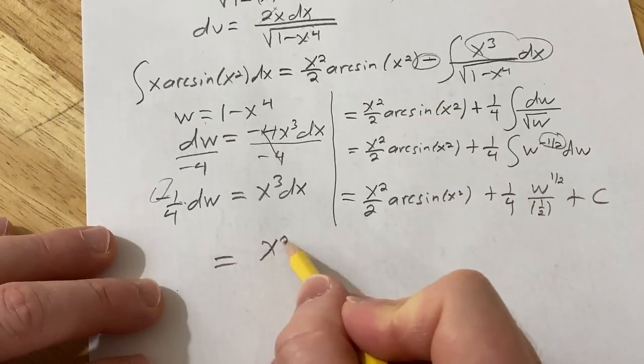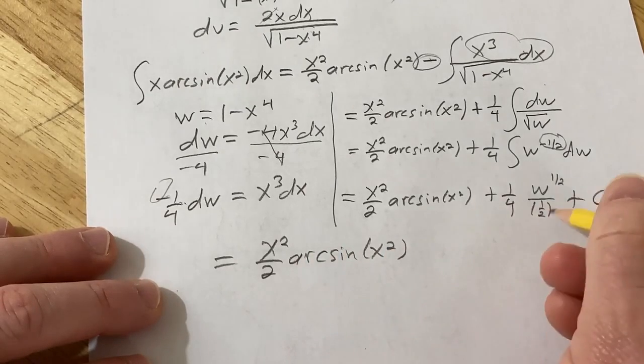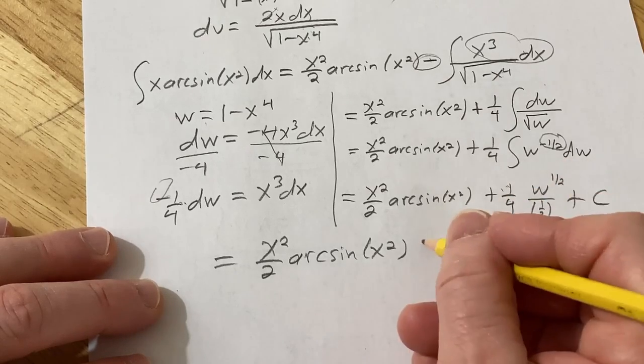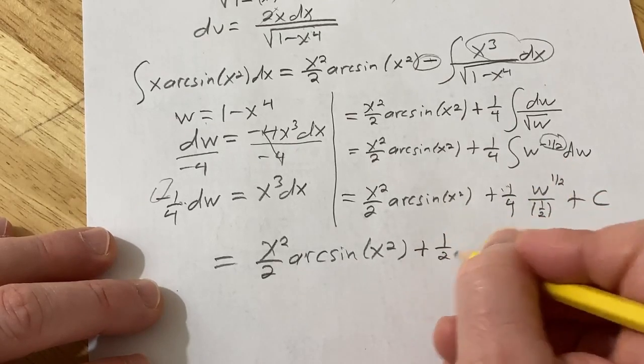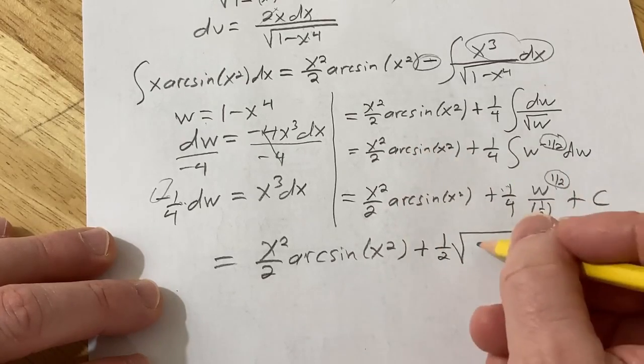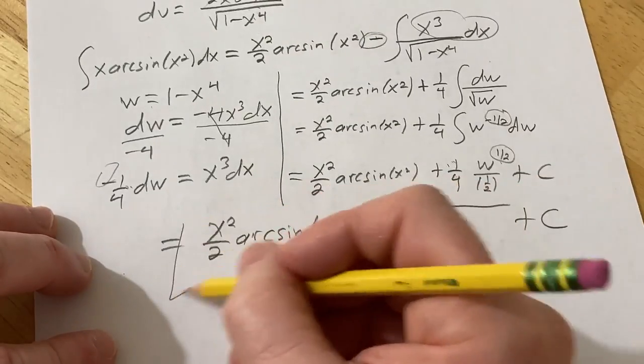So this is equal to, going pretty quick, arcsin x squared. You basically, you're multiplying by 2 here, so you're going to get 2 over 4, which is 1 half. Square root of, that's a square root, and then w was 1 minus x to the 4th. Plus our constant of integration. Boom, and there's the answer.